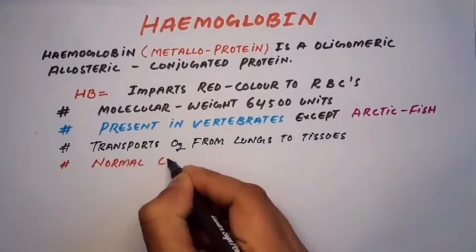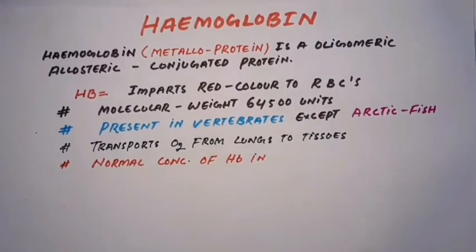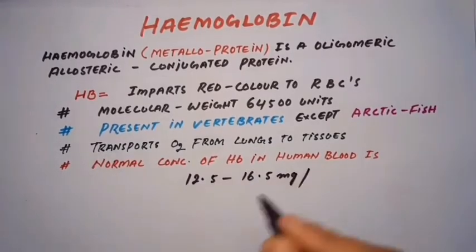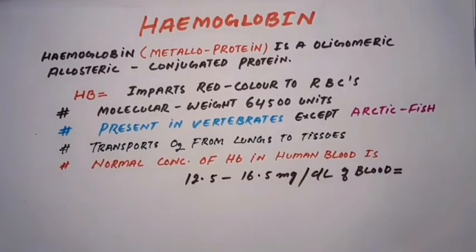Normal concentration of haemoglobin in human blood is 12.5 to 16.5 mg per deciliter of blood.